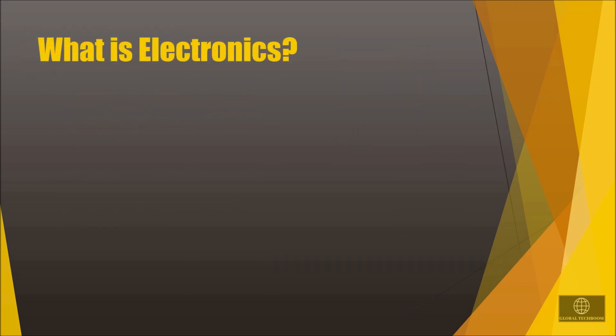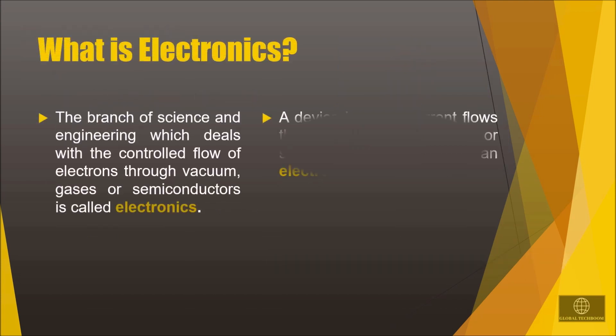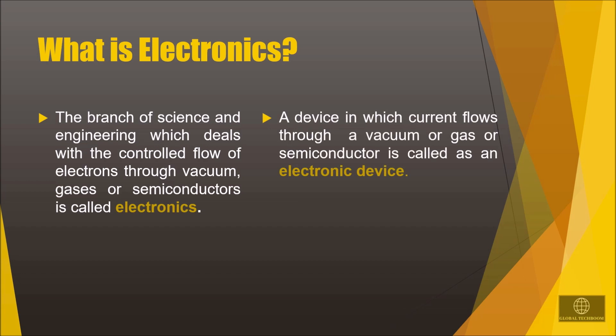So what is electronics? It's a branch of science and engineering which deals with the control flow of electrons through vacuum, gases, or semiconductors. An electronic device is a device in which the current flows through a vacuum, gas, or semiconductor. All electronic gadgets have many components in them like resistors, capacitors, diodes, ICs, etc. These components are made up of semiconductor materials and their working is based on the amount and direction of current flowing through them.